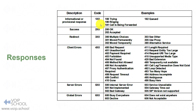The second provisional message is 180 Ringing — it signals the ringing of the phone and usually does not carry media. The 183 Session Progress, which is not on the slide, is responsible for early media. You can play a message even before the call is answered.